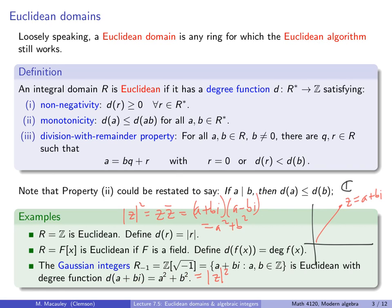You may be wondering why we don't just take the square root and define the degree function to be the standard complex norm. Well, technically we have defined the degree function to have codomain Z, the integers. So the degree of every Gaussian integer has to be an integer, and if we took the square root of that, we would break that property.